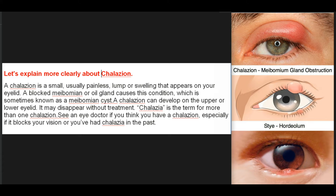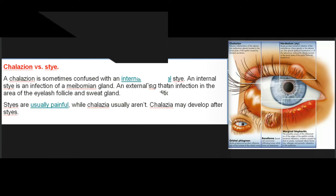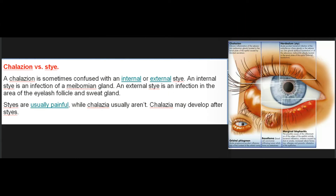Chalazia is the term for more than one chalazion. See a doctor if you think you have a chalazion, especially if it blocks your vision or you've had chalazia in the past. Chalazion versus stye: A chalazion is sometimes confused with an internal or external stye. An internal stye is an infection of a meibomian gland; an external stye is an infection in the area of the eyelash follicle and sweat gland. Styes are usually painful, while chalazia usually aren't. Chalazia may develop after styes.